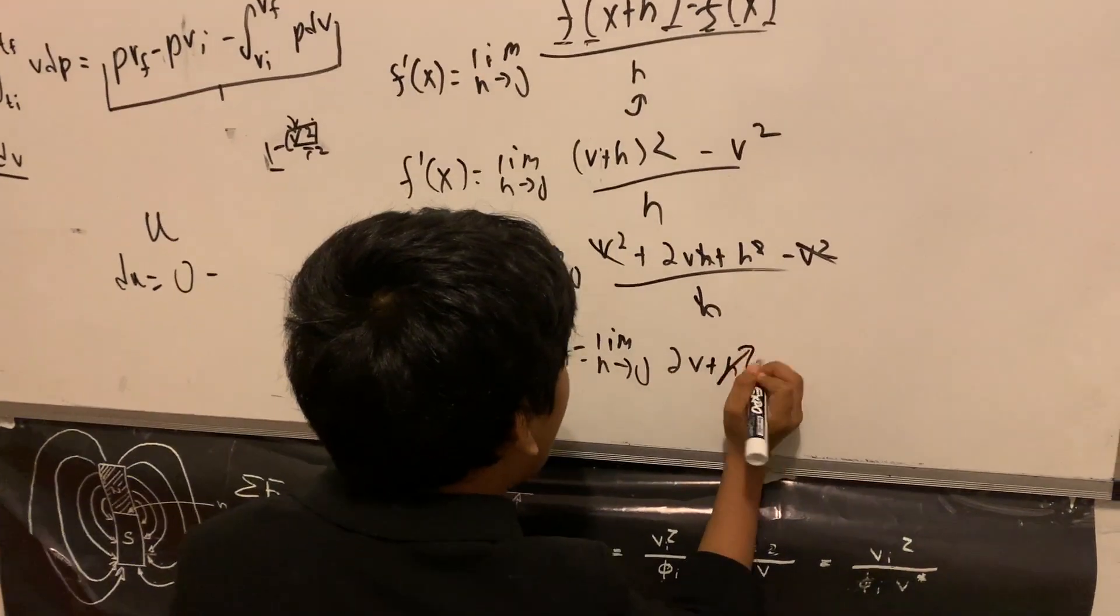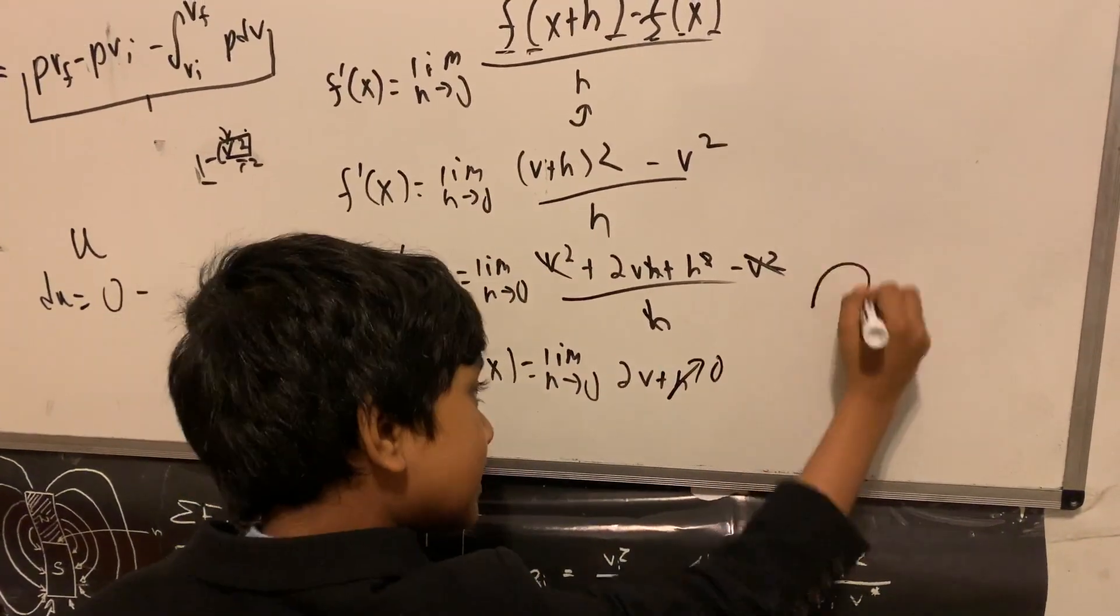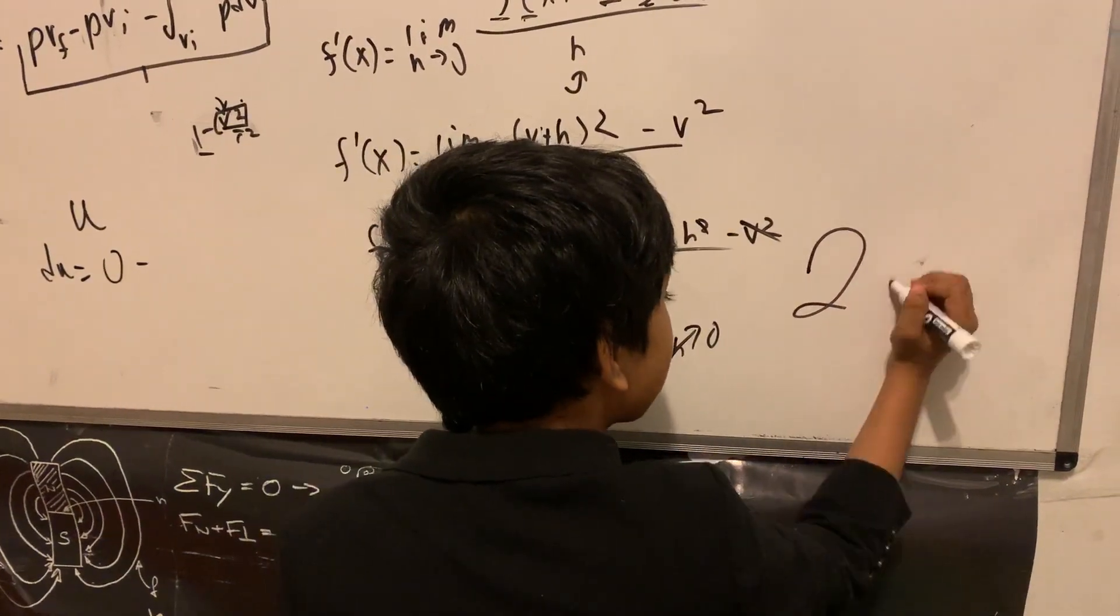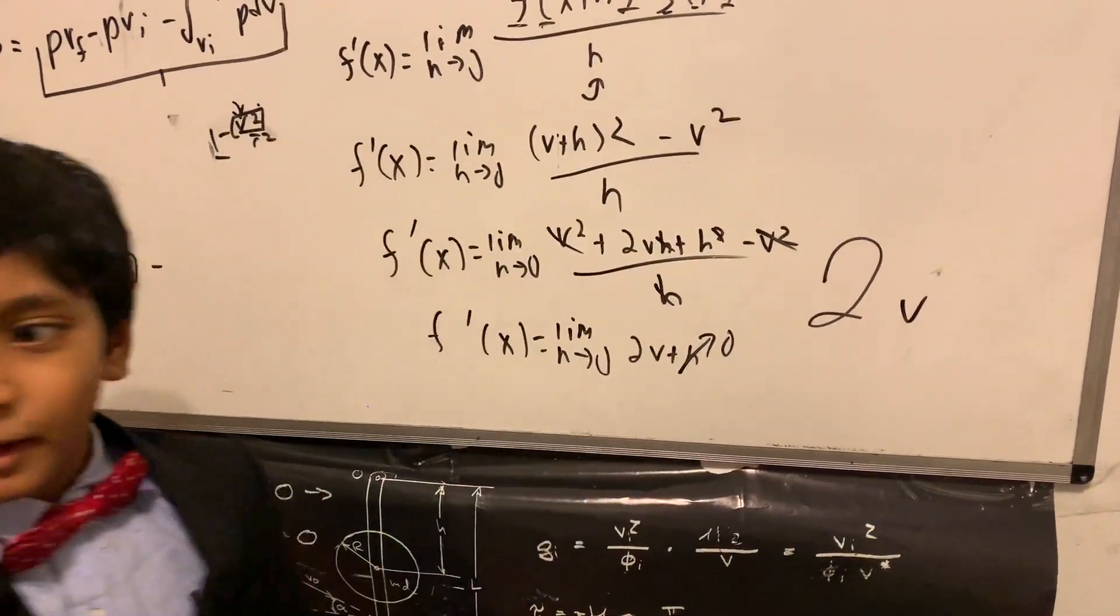Now, H has to approach zero, so that means that we get 2V, believe it or not. I know a thing or two about calculus.